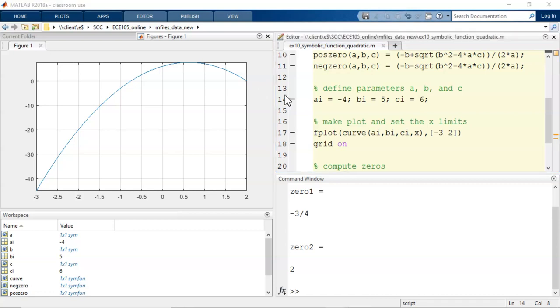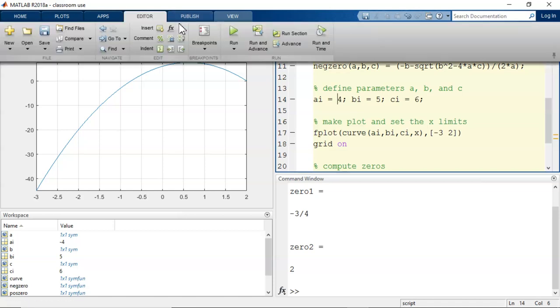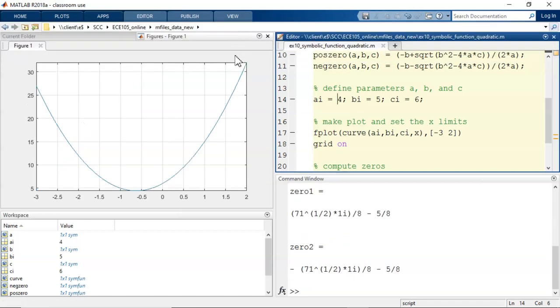Now, for a change, I'll change the a value to positive 4 and run again. We immediately see the curve flip around and the new zeros displayed. This illustrates the flexibility that comes with well-defined symbolic functions.